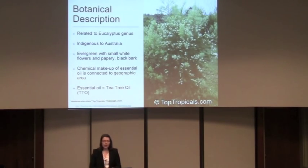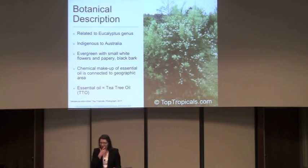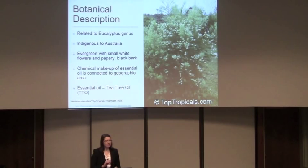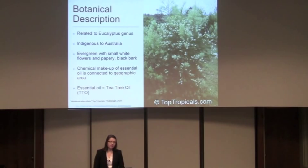The botanical description: you've all heard of eucalyptus, which is also in the same family. This is another member that's a little less well-known here in the United States. It's indigenous to Australia — an evergreen with small white flowers and a black paper bark, which is where the name 'paper bark tree' comes from. It's indigenous to Australia, specifically New South Wales and Queensland.